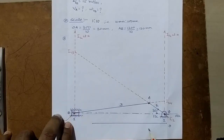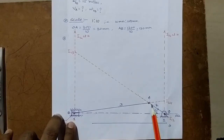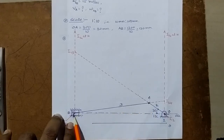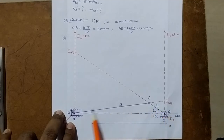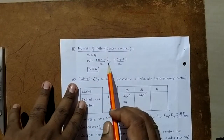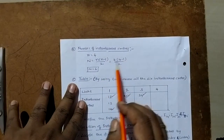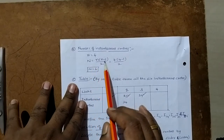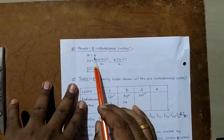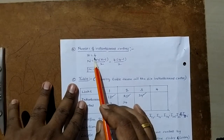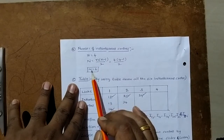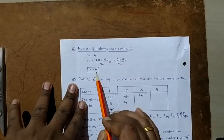Now I want to give names to the links. Whatever is fixed is link number 1. The crank is link number 2. The connecting rod AB is link number 3. And the slider is link number 4. After constructing this slider crank mechanism, find out the number of instantaneous centers. With the help of the equation N = n(n-1)/2, where small n is the number of links equal to 4, substituting gives the number of instantaneous centers as 6.